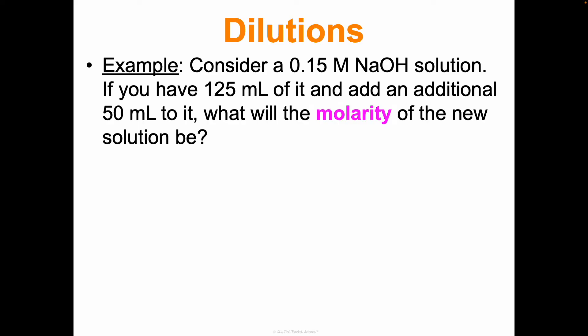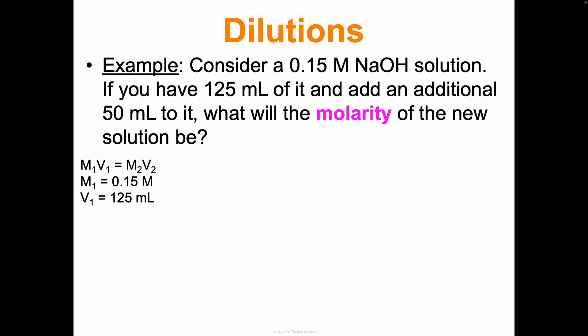Consider a 0.15 molar sodium hydroxide solution. If you have 125 milliliters of it and you add an additional 50 milliliters to it, what will the molarity of the new solution be? Let's do RADAR. Anytime you see multiple volumes and multiple molarities, you know you're doing a dilution using M1V1 = M2V2. We know the original molarity: 0.15 molar. We know the original volume: 125 milliliters.